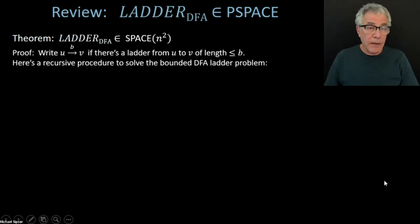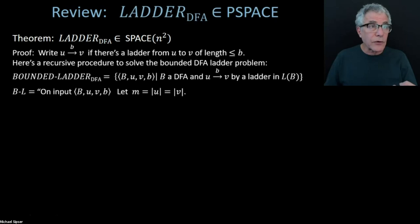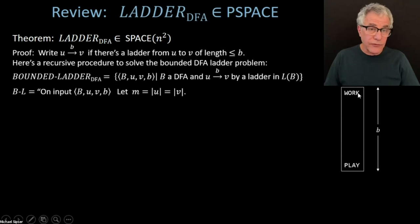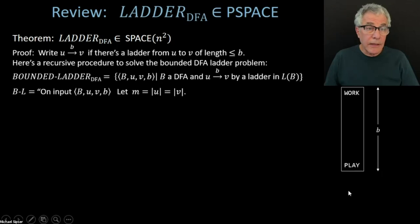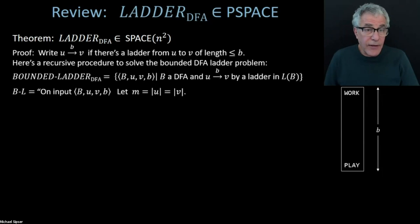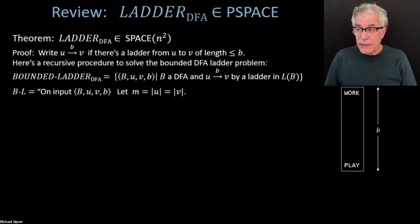Let's review the ladder DFA problem. The ladder problem involves a sequence of strings that change one symbol at a time, connecting one string to another — for example, going from 'work' to 'play' changing one symbol at a time. The computational problem is: can you get from one string to another while staying within a certain language, such as the language of English words or strings accepted by a specific DFA?